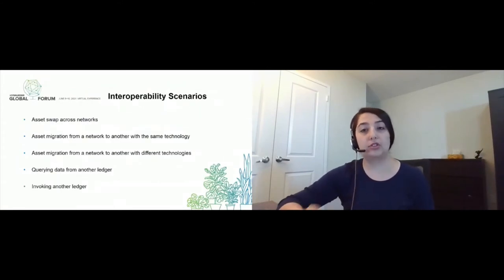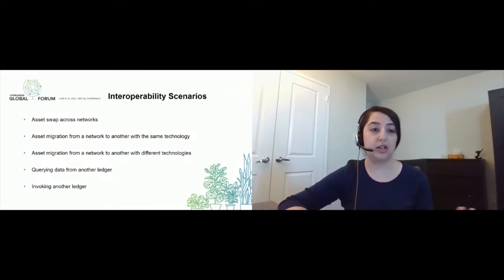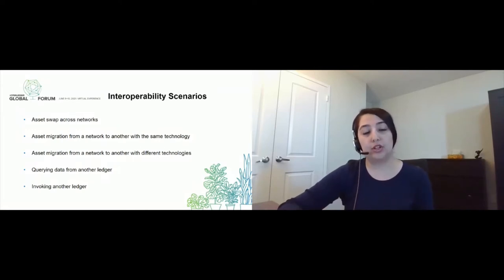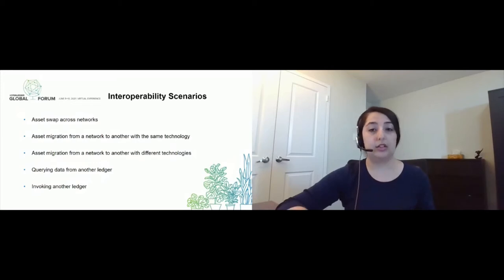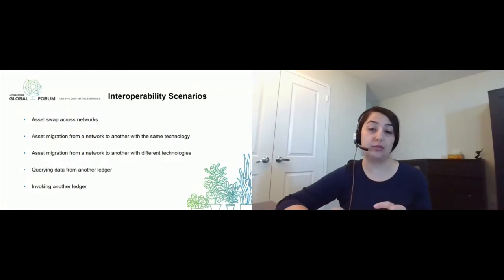Now, when we think about interoperability, there are different scenarios that come to mind. First of all, we may need to swap different assets across networks. For example, I have some Bitcoin and my friend has some Ethereum, and we want to swap these between networks — this is an asset swap. But then we may want to migrate an asset from one network to another. For example, if you have a decentralized identifier on one Hyperledger Indy instance, I may need to migrate that to another Hyperledger Indy instance — that's asset migration between networks with the same technology.